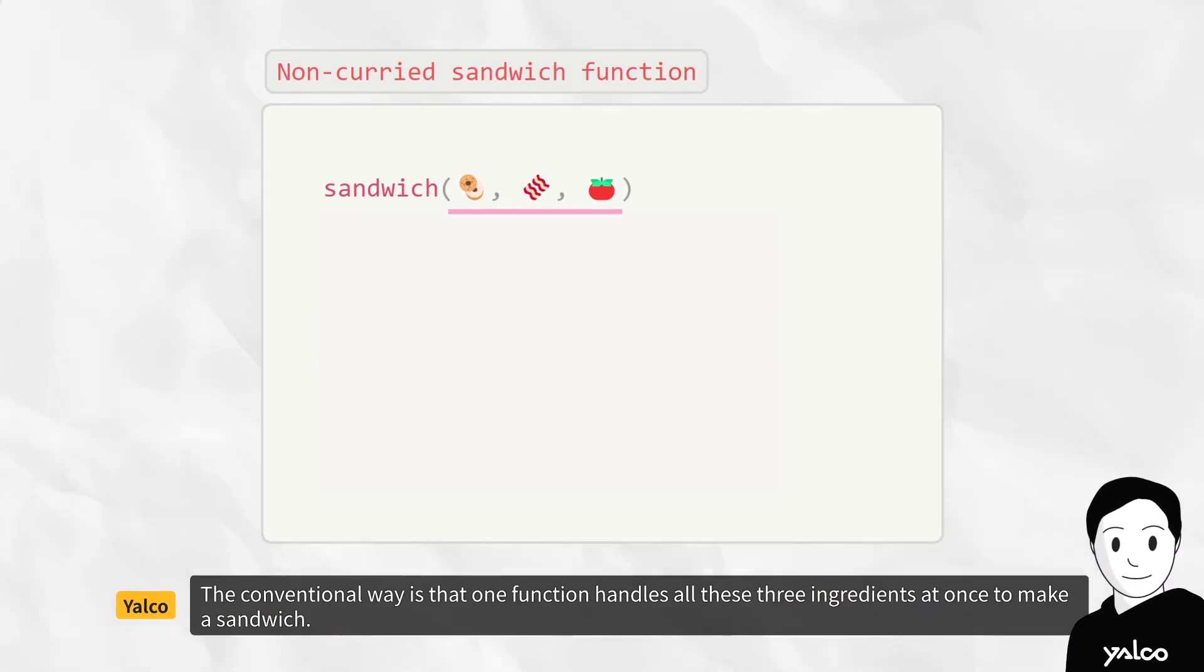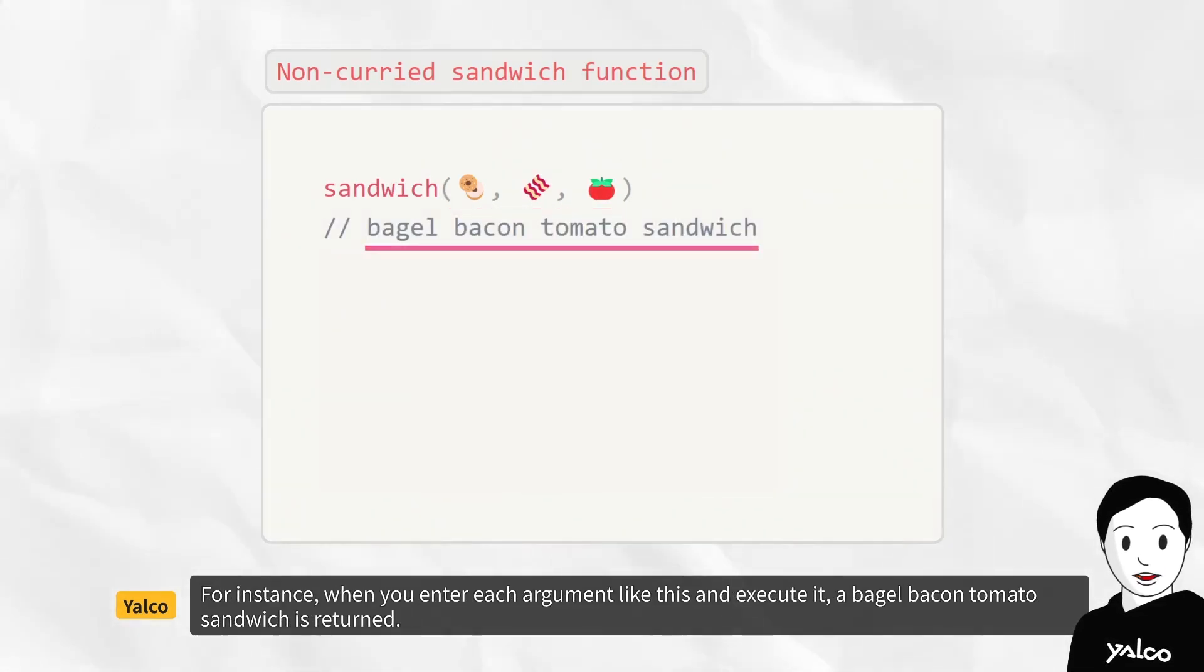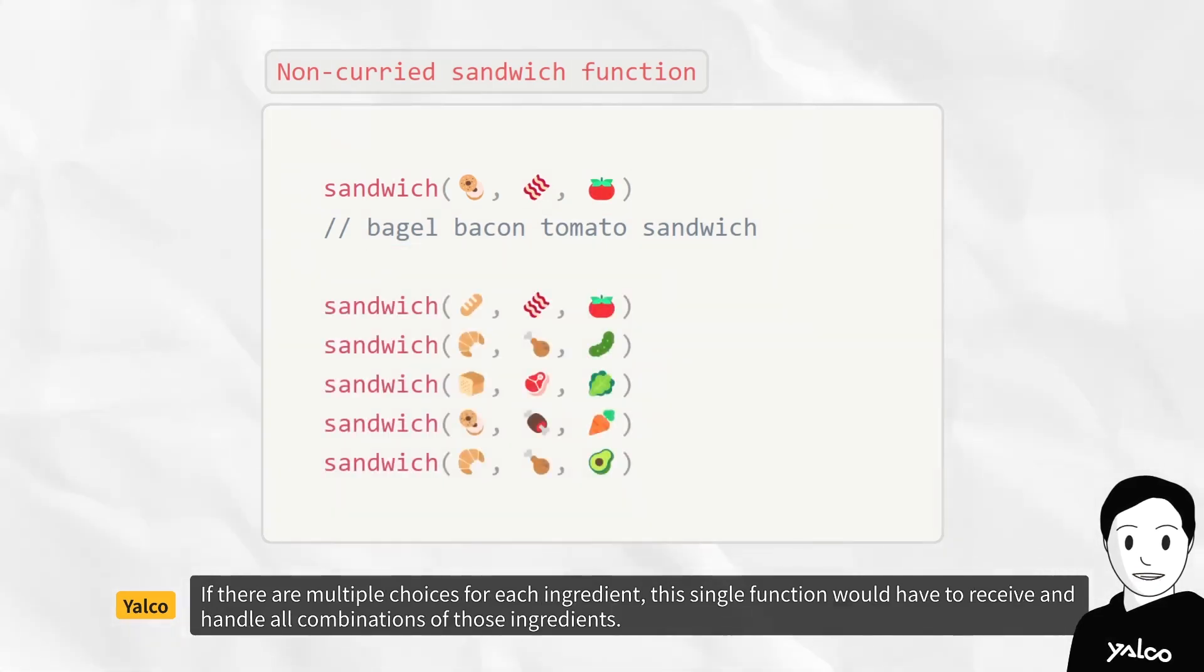The conventional way is that one function handles all these three ingredients at once to make a sandwich. For instance, when you enter each argument like this and execute it, a bagel bacon tomato sandwich is returned. If there are multiple choices for each ingredient, this single function would have to receive and handle all combinations of those ingredients.